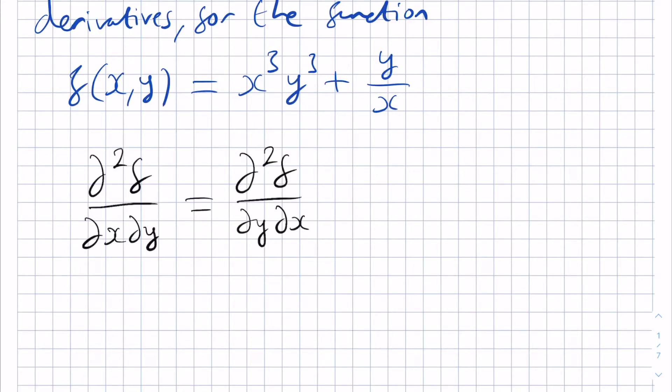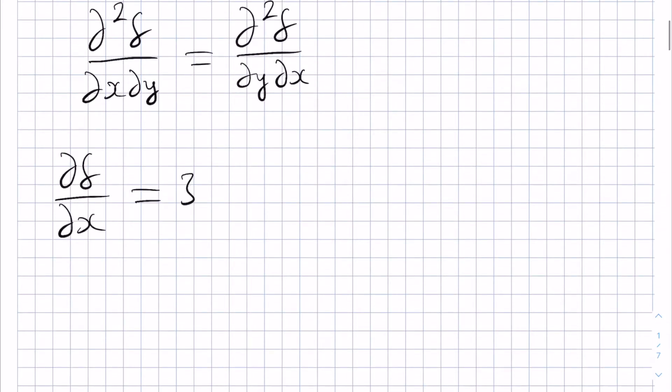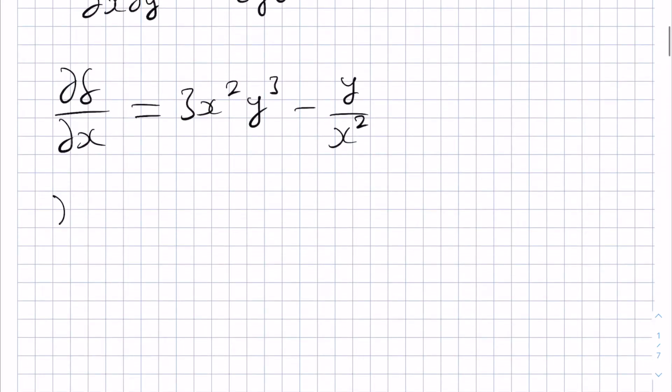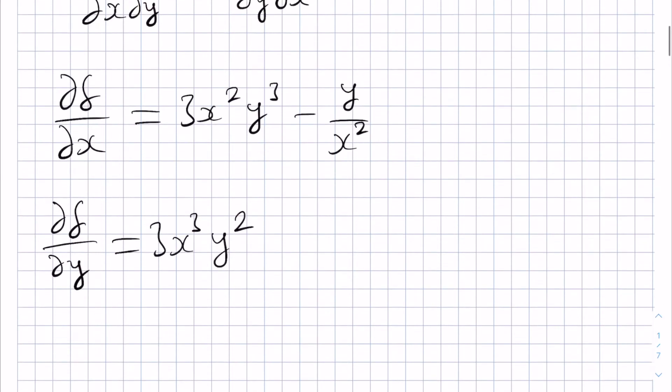So to check this, we begin by calculating the first derivatives of f. We have df by dx is 3x squared y cubed minus y over x squared. And then for df by dy, this will be 3x cubed y squared plus 1 over x.